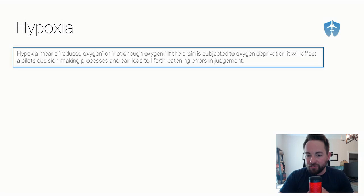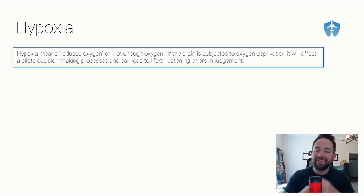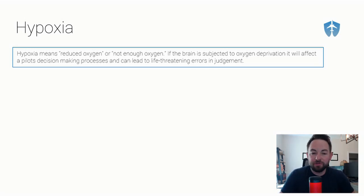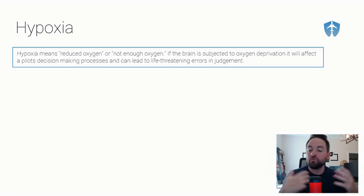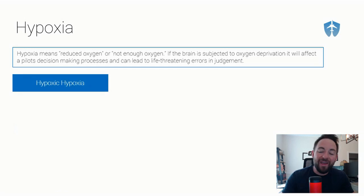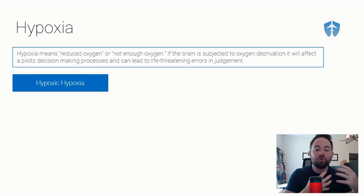If the brain is subjected to oxygen deprivation, it will affect a pilot's decision-making processes and that can lead to life-threatening errors in judgment. Hypoxia is pretty simple to understand — we're just not getting enough oxygen. We're now going to break down the four different types, or the four different reasons your body or brain is not getting the oxygen molecules it needs.